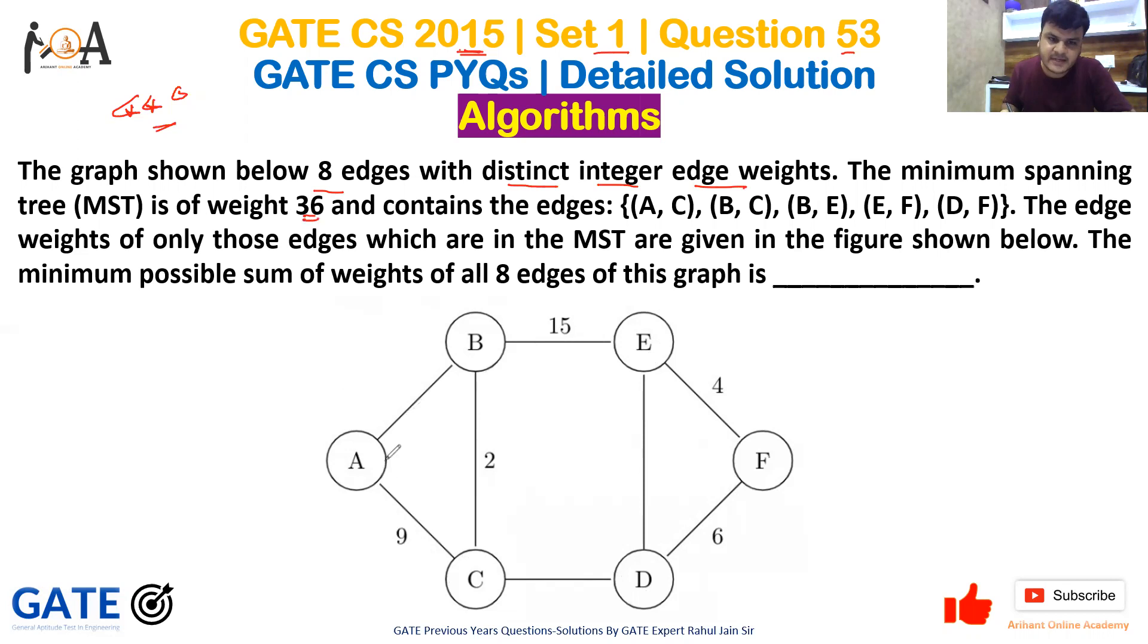The minimum spanning tree is of weight 36. The MST includes edges A-C, B-C, B-E, E-F, and E-D. That is: this one, this one, this one, that one, and this one.